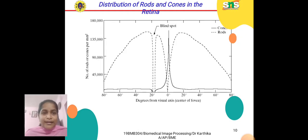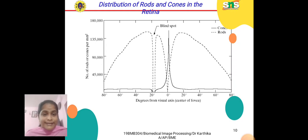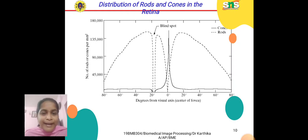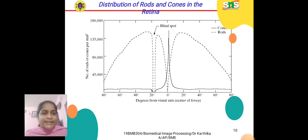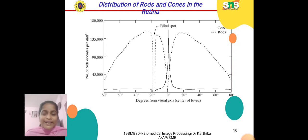This diagram represents the distribution of rods and cones in the retina. On the x-axis we have degrees from the center of fovea along the visual axis, and on the y-axis, the number of rods and cones per millimeter square. At the blind spot, there are no rods or cones, so there is no vision there. The dotted line represents rods and the straight line represents cones. Rods and cones are responsible for bright light and dim light vision.